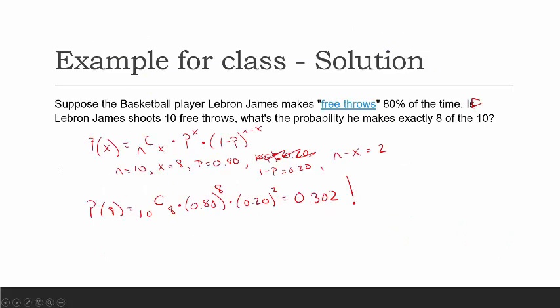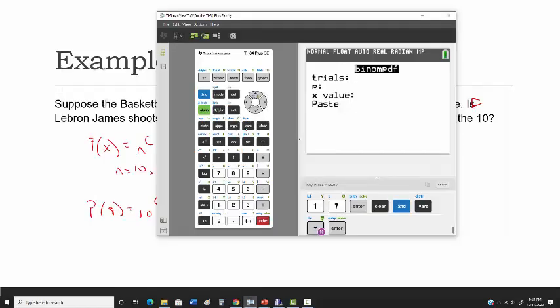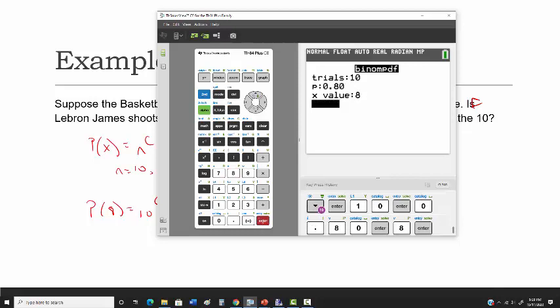Going back to the LeBron James example. Trials is 10, P is 0.8, and X is 8. So using this calculator, 10 trials, probability of success is 0.80, and we want X successes. Notice how it puts this, Binome PDF 10, 0.80, 8.